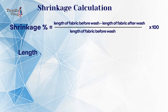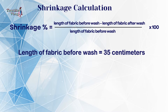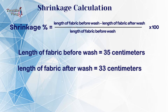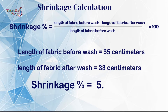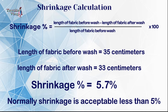For example, length of fabric before wash: 35 cm. Length of fabric after wash: 33 cm. From the above calculation, shrinkage percent is 5.7%. Normally, shrinkage is acceptable at less than 5%, but this can change based on buyer requirements.